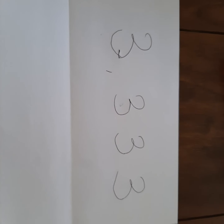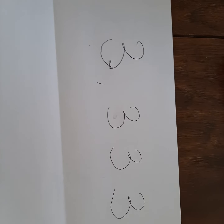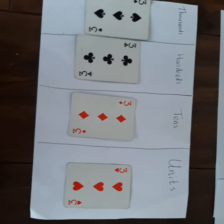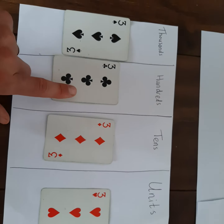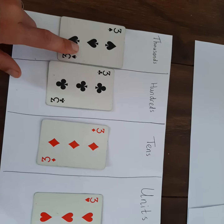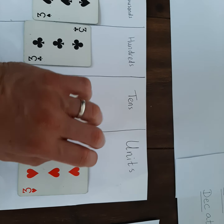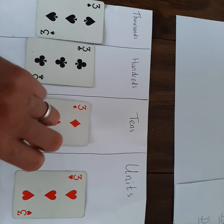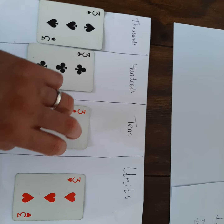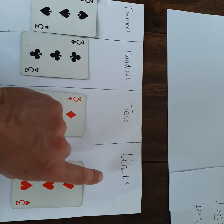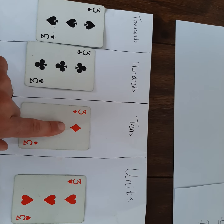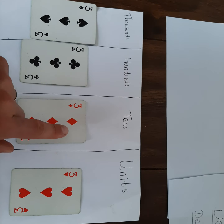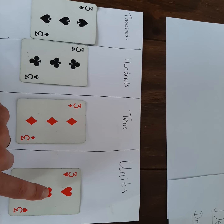Let's have a quick look at a normal number here. I have 3,333, and I've written it out here in a place value chart — my three units, my three tens, my three hundreds, and my three thousands. As you move to the left in normal numbers, your value grows by 10. Tens are 10 times bigger than units, so this here isn't worth 3, it's worth 30. The 3 in the units is only worth 3.